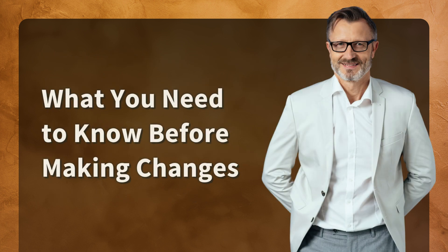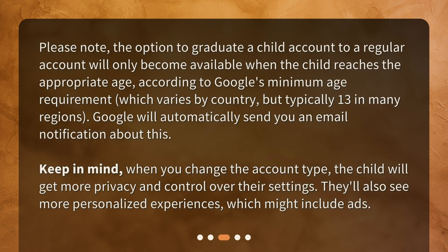Please note, the option to graduate a child account to a regular account will only become available when the child reaches the appropriate age, according to Google's minimum age requirement, which varies by country but is typically 13 in many regions. Google will automatically send you an email notification about this. Keep in mind, when you change the account type, the child will get more privacy and control over their settings, and they'll also see more personalized experiences, which might include ads.